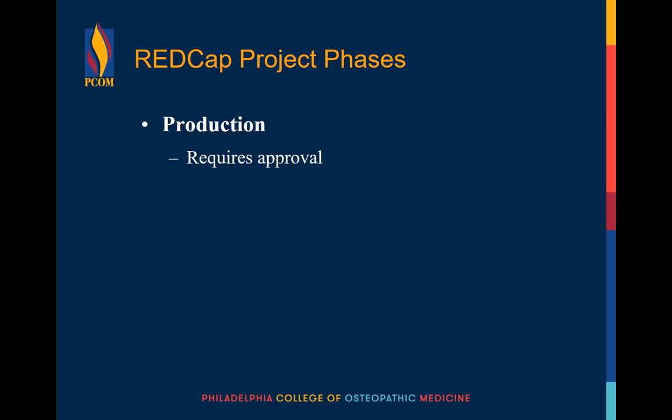Once you have everything completely designed and tested multiple times, you'll be ready to submit a request to move your REDCap project to production by emailing a PDF of your IRB approval documentation to redcap.pcom.edu. After your project has been moved to production, you'll be ready to start collecting data. When you have all your data, you'll be ready to export it for analysis. Once you have started collecting data in a project moved to production, any critical changes made to your project will require further review by a REDCap administrator.